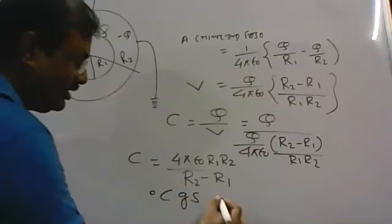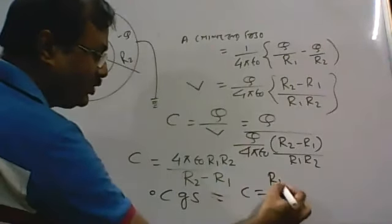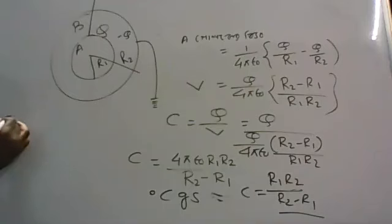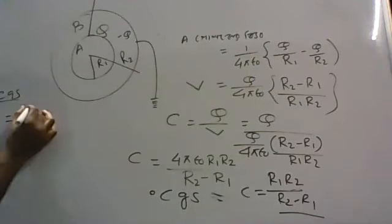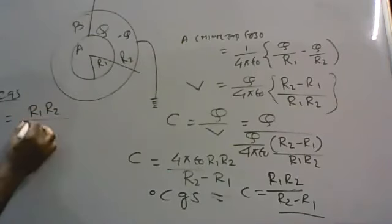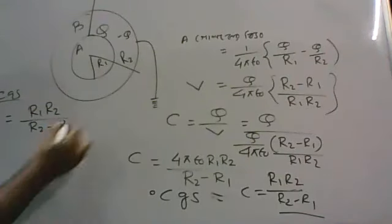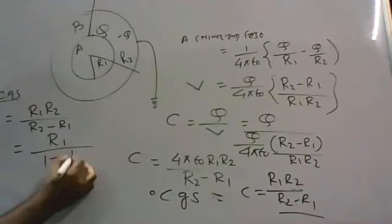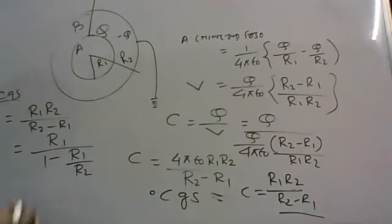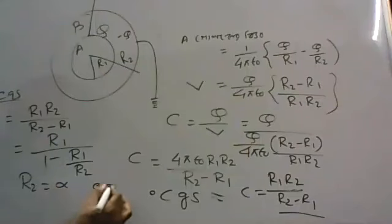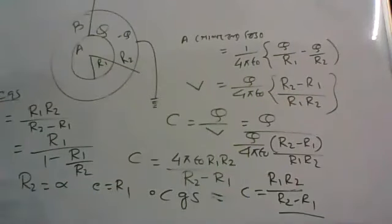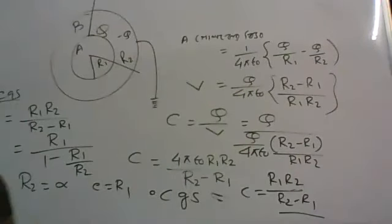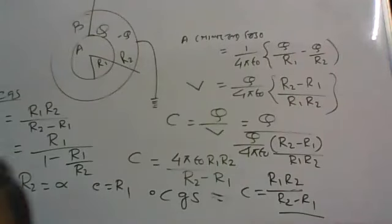This is C is equal to R1 R2 by R2 minus R1. Even if C is given to us, R1 R2 by R2 minus R1. Here we have R1 R2 by R2 minus R1, 1 minus R1 by R2. So this is R2 by R2. C is equal to R1. The value of R2 is equal to R1.